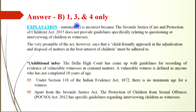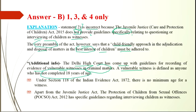Statement 2 is incorrect because the Juvenile Justice Act 2015 does not provide specific guidelines in relation to questioning or interviewing of a child as a witness. However, the preamble of the Act says that a child-friendly approach in the adjudication and disposal of matters in the best interest of children must be adhered to. The Delhi High Court has issued guidelines for recording of evidence of vulnerable witnesses in criminal matters, where a vulnerable witness is defined as anyone who has not completed 18 years of age. Under Section 118 of the Indian Evidence Act 1872, there is no minimum age for a witness. The POCSO Act 2012 has specific guidelines regarding interviewing children as witnesses.